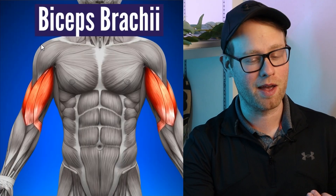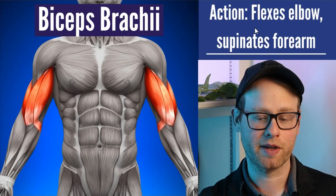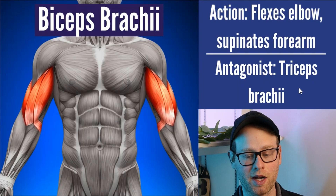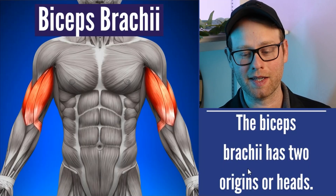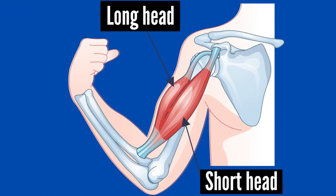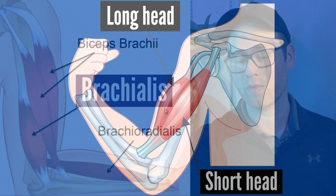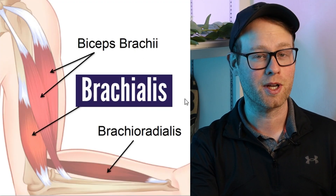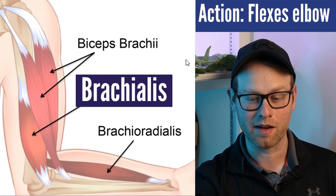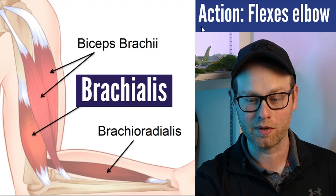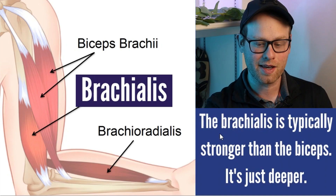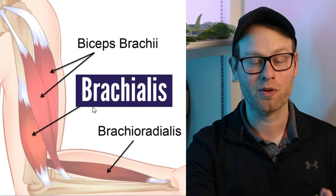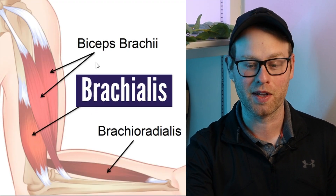Next up, we have the most famous upper body muscle — biceps brachii. This muscle does elbow flexion and also supinates the forearm. The antagonist is the triceps. It's called the biceps because it has two different origins, or two different heads. Next, we have the brachialis — the biceps' underappreciated brother. It does the same action as the biceps — elbow flexion — and is typically stronger than the biceps. You just never think about your brachialis because it's a deeper muscle.